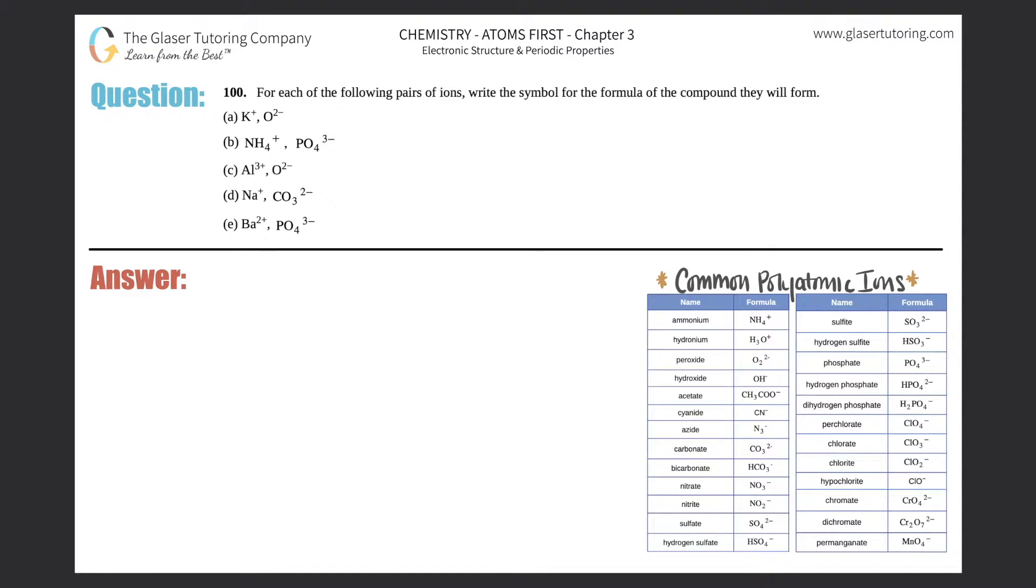Number 100: For each of the following pairs of ions, write the symbol for the formula of the compound they will form. I have parts a through e, so I'm just going to write over here a, b, c, and then d and e we'll put down here.